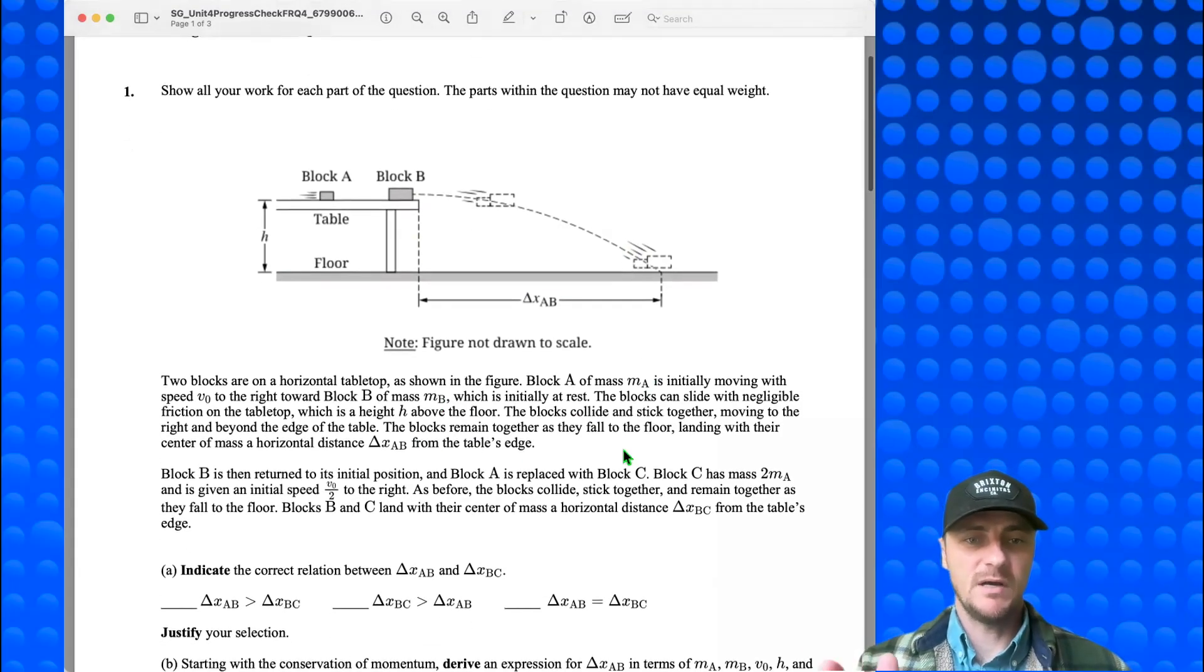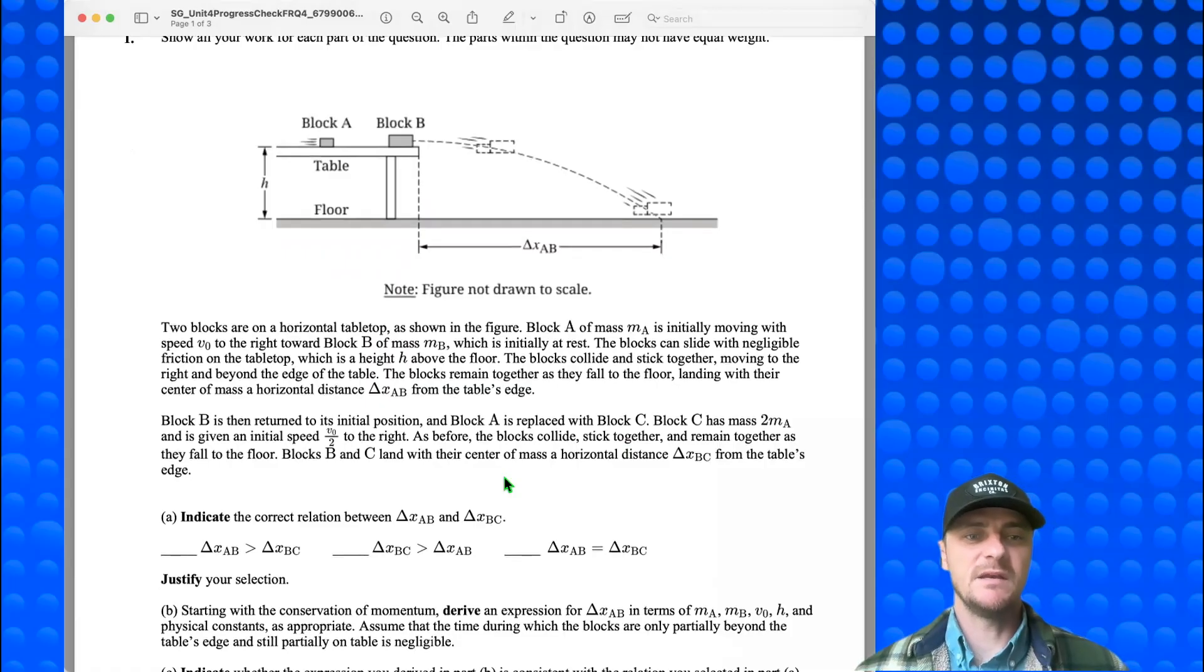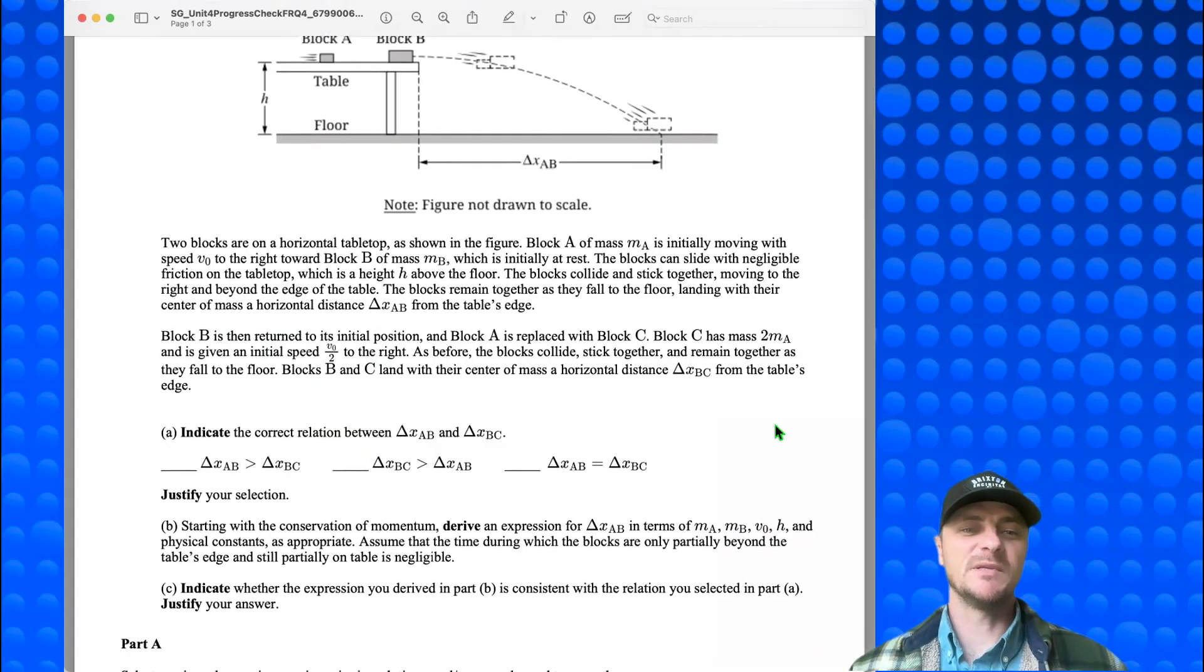So we have the description here, pause it, read it. The next part, block B is then returned to its initial position, and block A is replaced with block C. Block C has a mass 2MA and is given an initial speed V0 divided by 2 to the right. I should say that block A had initially a speed V0 in the first scenario. Back to the second scenario. As before, the blocks collide, stick together, and remain together as they fall to the floor. Blocks B and C land with their center of mass a horizontal distance delta XBC from the table's edge. Part A: indicate the correct relationship between delta XAB and delta XBC.